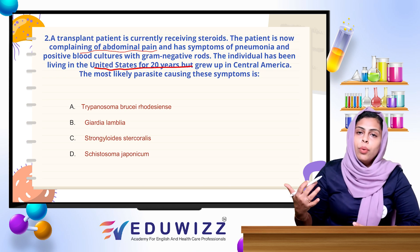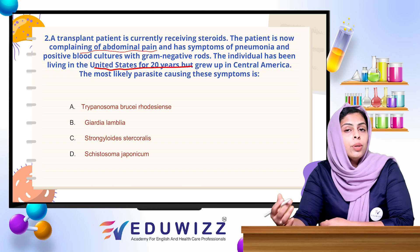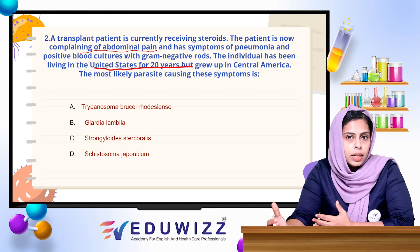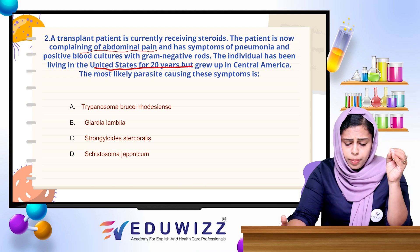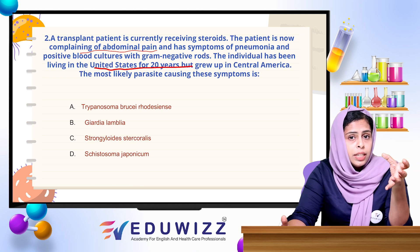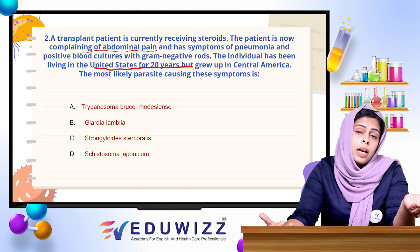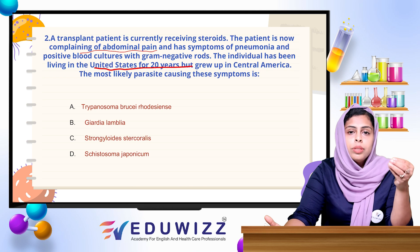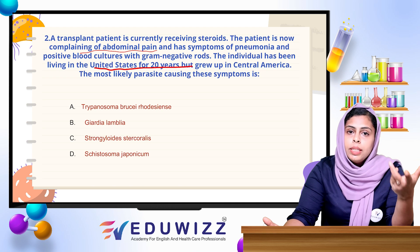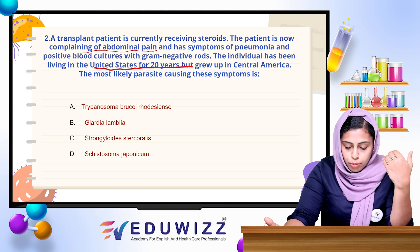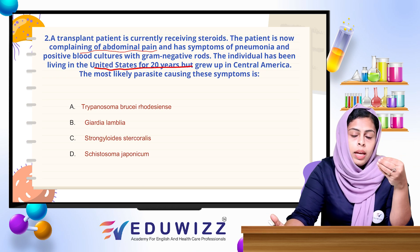Why are they asking for this parasite? When steroids are introduced into the body, there are persisting infections and asymptomatic infections in the body. The disease becomes parasitic. Mostly in the United States, Central America, they live in the presence of nematodes.